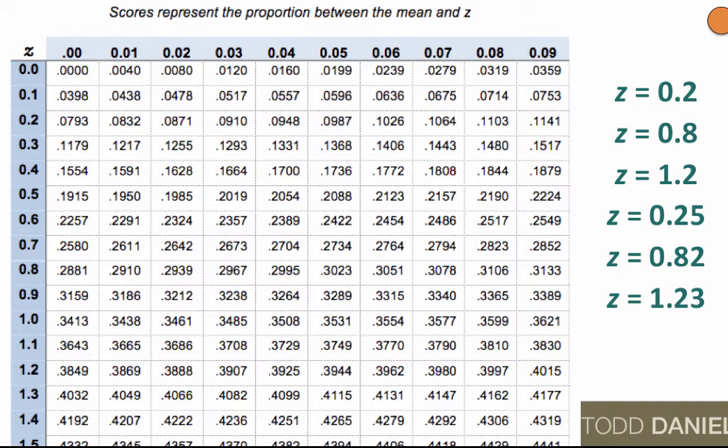What is the proportion of scores between the mean and z-score of 0.76? The answer is 0.2764.